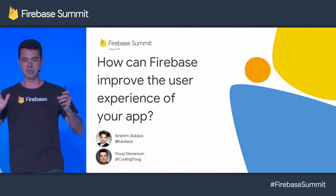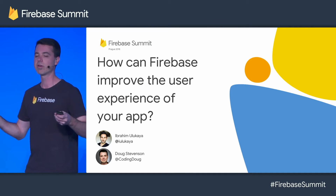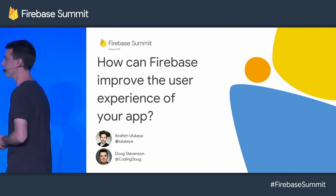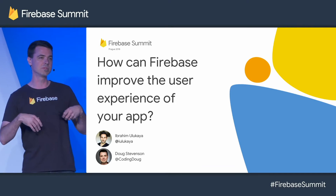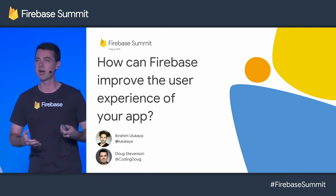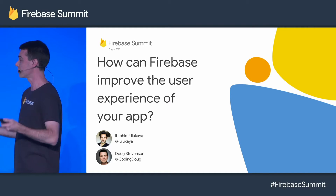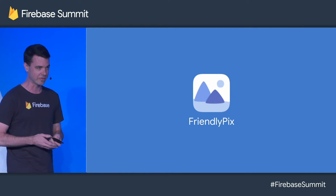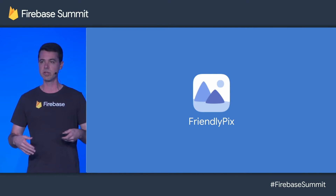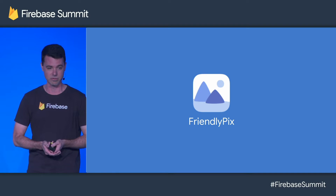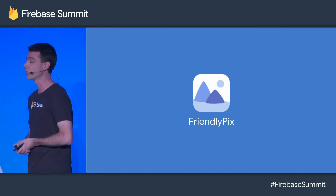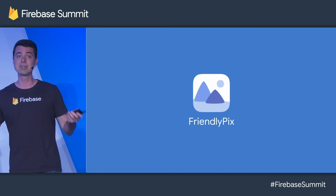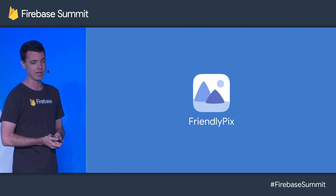We thought it would be good to tell you about how you can use Firebase products to test your app. The title of this talk is: How Can Firebase Improve the User Experience of Your App? And we'd like to show you how we used Firebase in an app that we built called Friendly Pix. Friendly Pix is an app you can use to share pictures with friends, kind of like a social network. It's open source for iOS, Android, and the web. We use it as a demo app to showcase Firebase APIs and products.